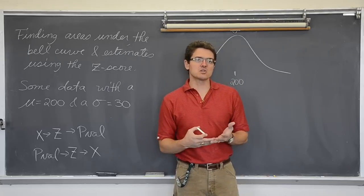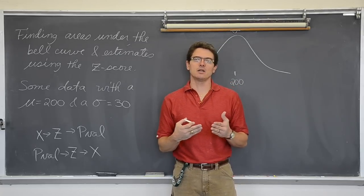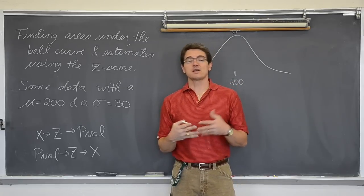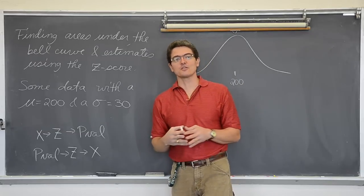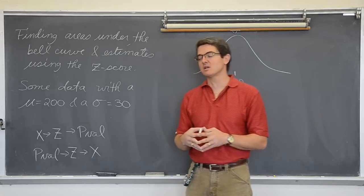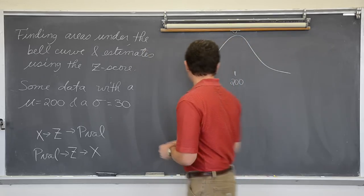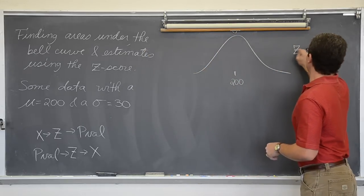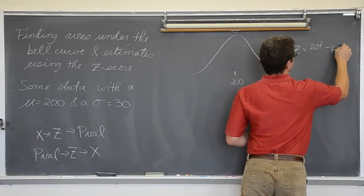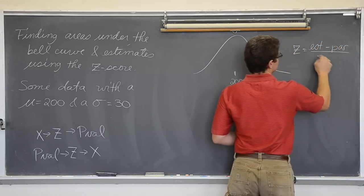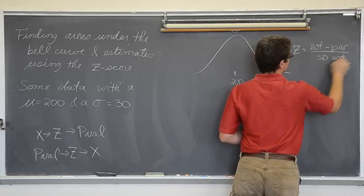So I have been talking about z-scores or standard normal calculation, standard normal distribution. Now I have got these bell curves all over the place and I have defined what normality is. Let's actually tie the two together and see how the z-score calculation which is estimate minus parameter over the standard deviation of the estimate actually works.